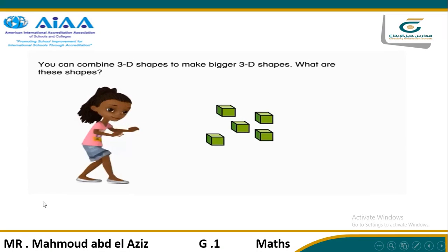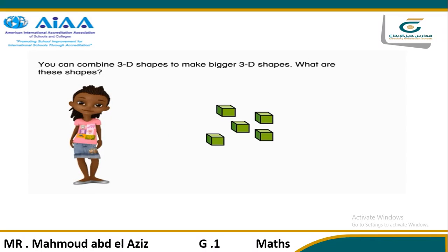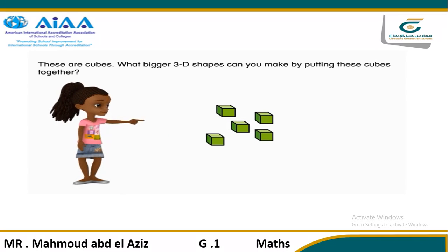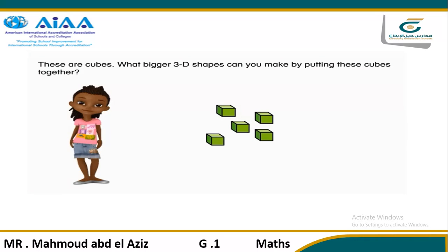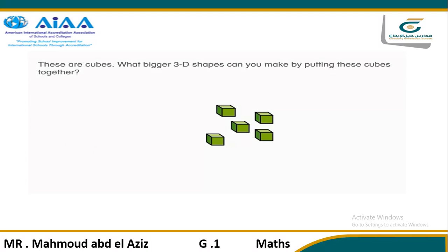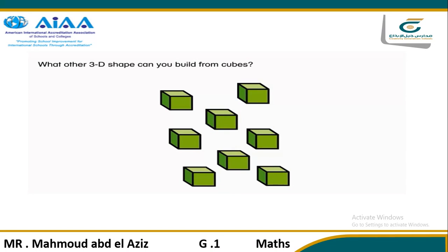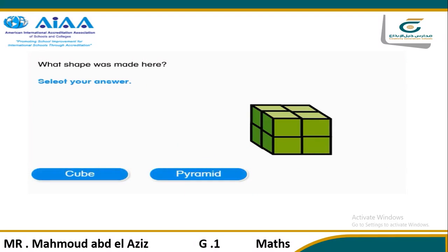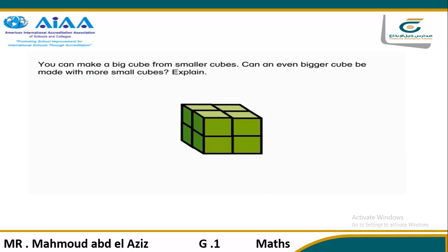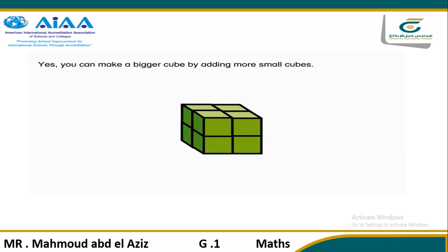3D shapes to make bigger 3D shapes. What are these shapes? These are cubes. What bigger 3D shape can you make by putting these cubes together? You can build a rectangular prism from cubes. What other 3D shapes can you build from cubes? What shape was made here? You can make a bigger cube from smaller cubes. Can an even bigger cube be made with more small cubes? Yes, you can make a bigger cube by adding more small cubes.